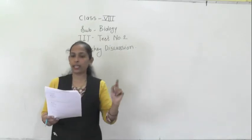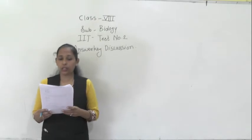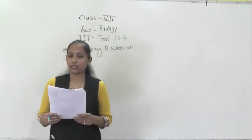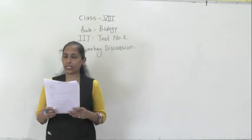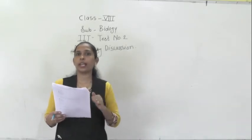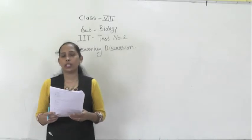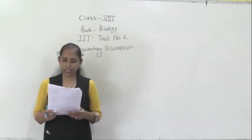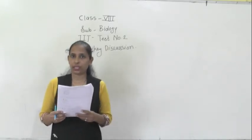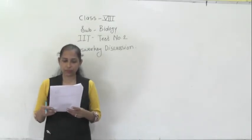Question number five: which of the following organelles is involved in cell wall synthesis? The correct option is option C, that is the Golgi apparatus, also called Golgi bodies.